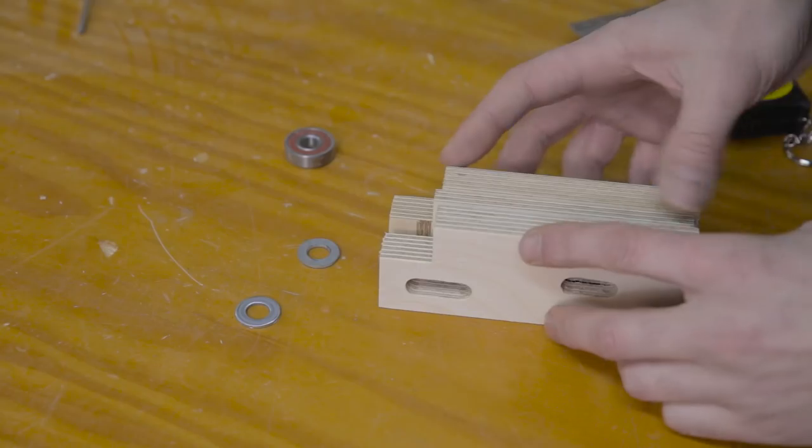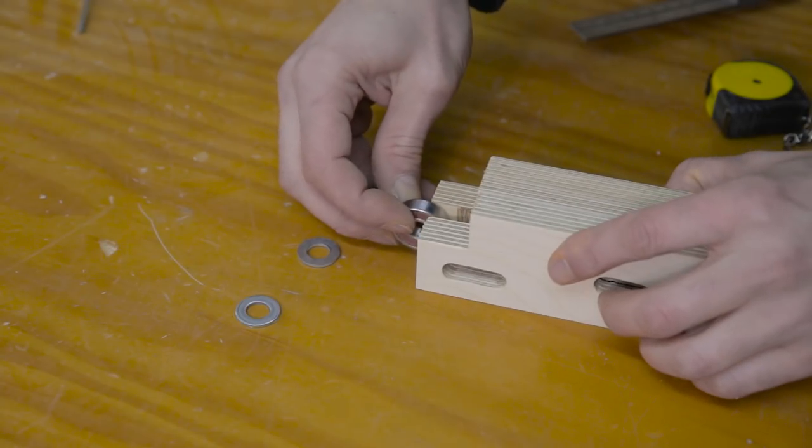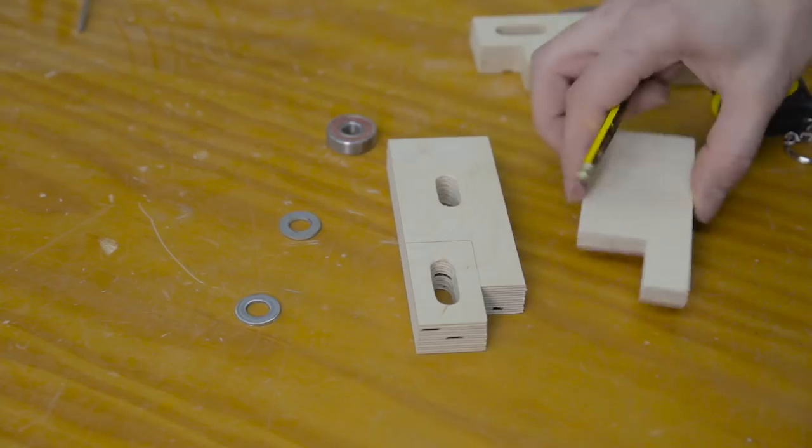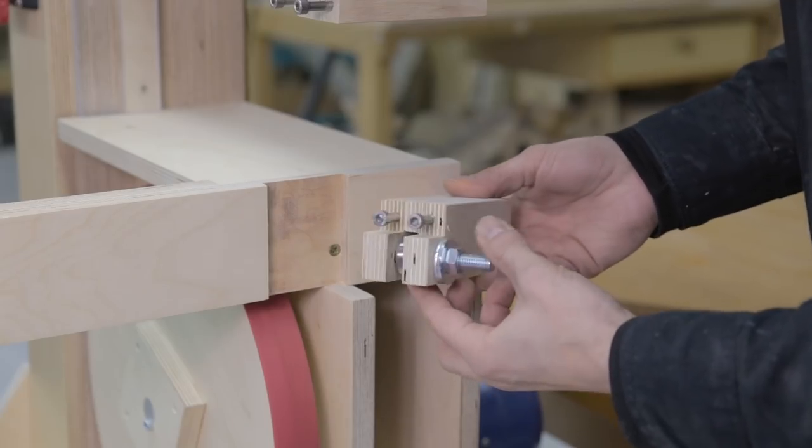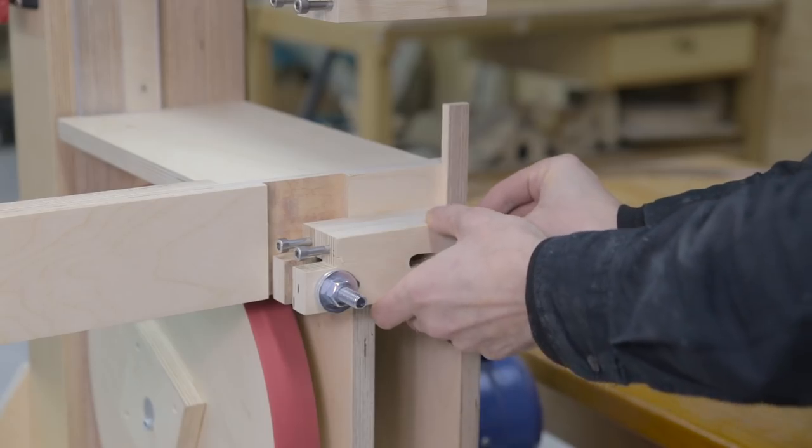The lower guide is quite similar to the upper one. It is also made of three parts that are glued together with a bearing in the middle. After machining them and putting them together, I can put the guide in its place.